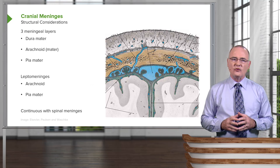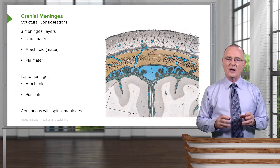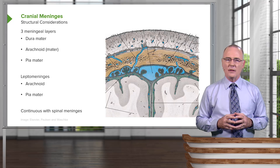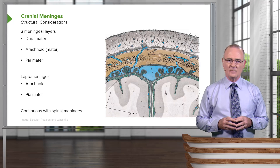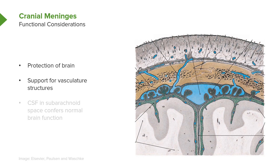The last structural consideration is that the cranial meninges are continuous with the spinal meninges. Now let's take a look at functional considerations. The cranial meninges provide protection of the brain, and they also allow support for vascular structures that traverse this region of our anatomy.